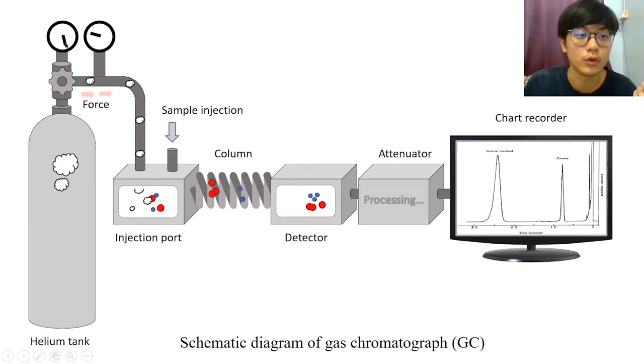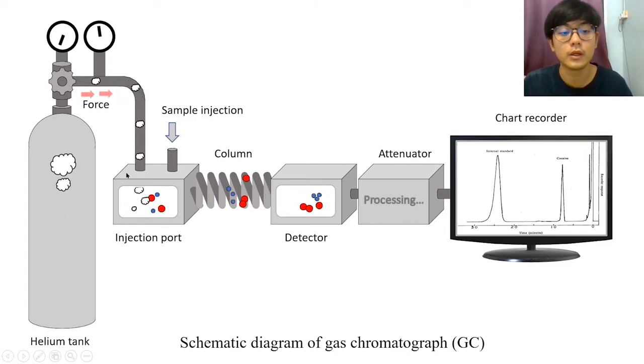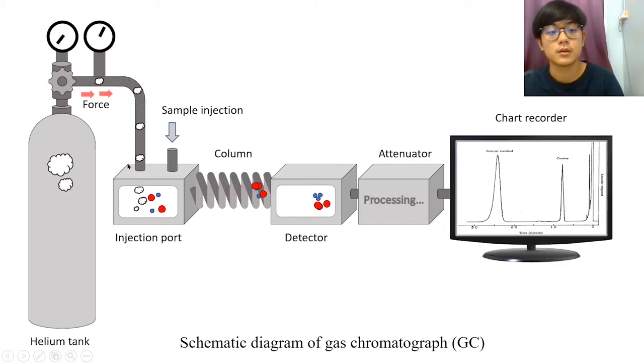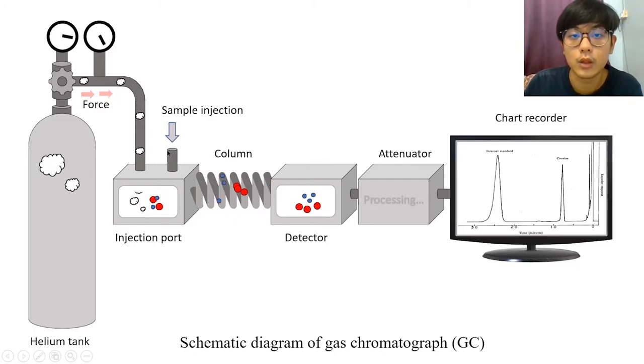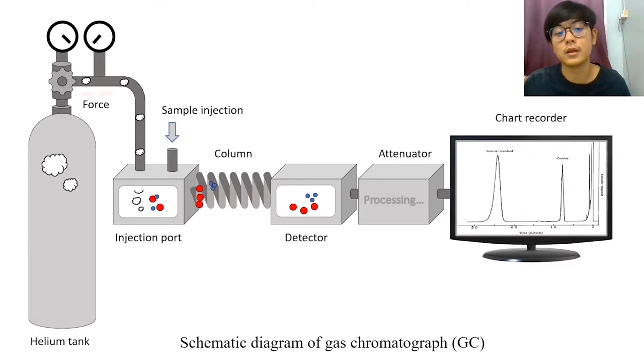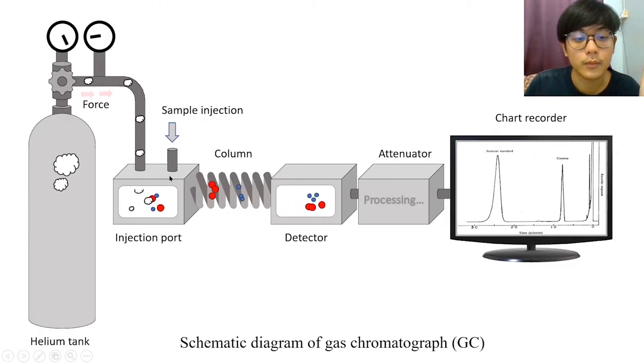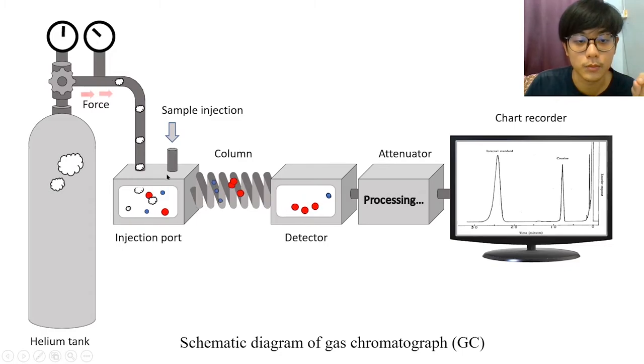A valve is used to control the pressure and also the flow rate of the helium going into the injection port. In the injection port, we actually inject the samples. The sample can be in liquid or in gas form. If it is in liquid form, it has to be heated up into vapor form by using the oven inside the injection port.